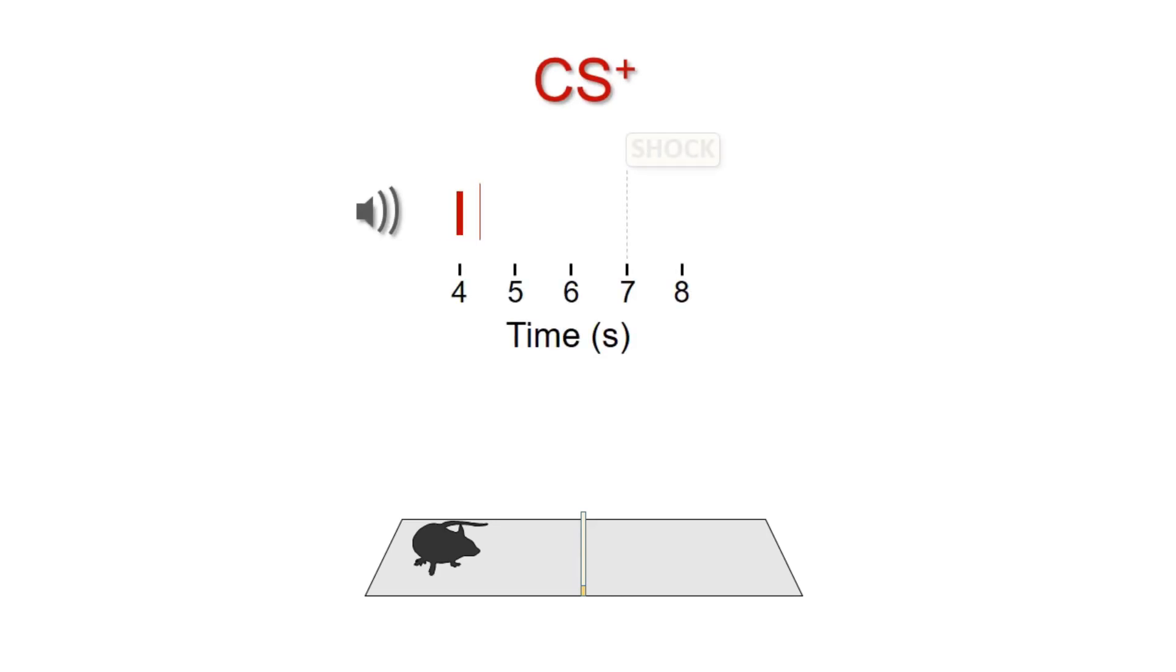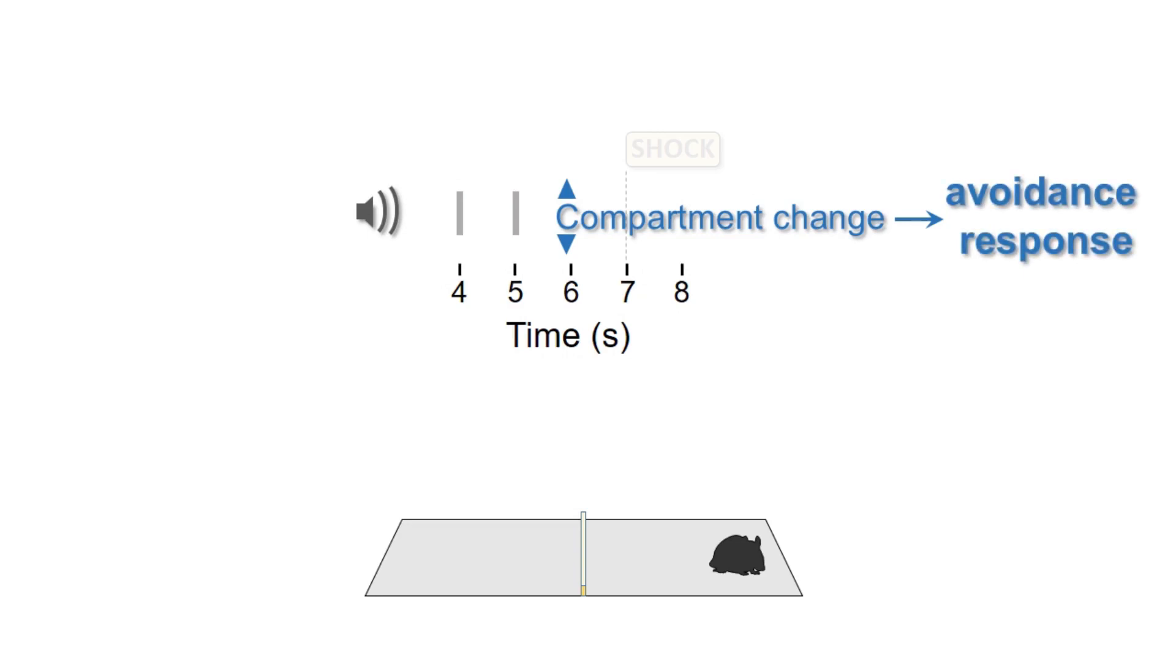We use an avoidance task where mice are placed in a maze with two symmetric compartments and presented with auditory stimuli. One that we call CS+, that is associated with an aversive stimulus after seven seconds, and another sound that we call CS- that is neutral. In addition, shuttling from the current compartment cancels any ongoing sound and contingent aversive event. That's what defines an avoidance response.